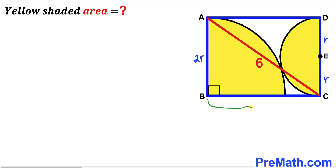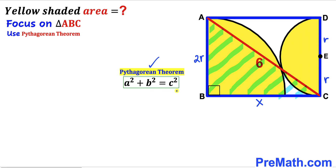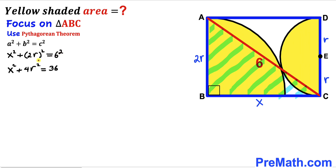Let's assume that side BC is lowercase x. We're going to focus on right triangle ABC and apply the Pythagorean theorem. Our hypotenuse is 6, and the two legs are x and 2r. Filling in the formula: x² + (2r)² = 6², which gives x² + 4r² = 36. Rearranging: x² = 36 − 4r². I'll label this as equation number 1.